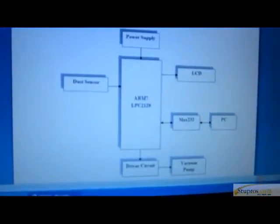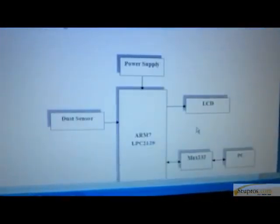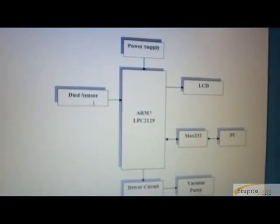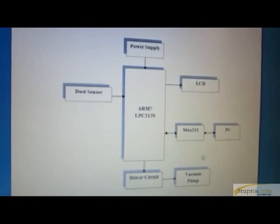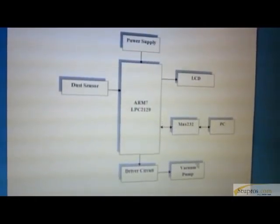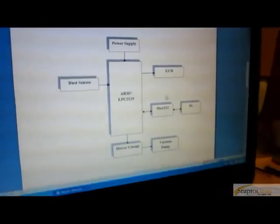Now I am going to show the block diagram. Here we have a dust sensor, ARM processor and then a PC. Then we have a vacuum pump for dust collection and then a status LCD. Here we are going to utilize the dust sensor to sense the dust in the environment. The dust sensor will collect the status of the environment and then give the status to the microcontroller. Then the vacuum pump is utilized to collect the dust.